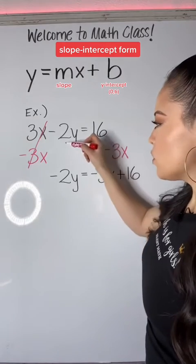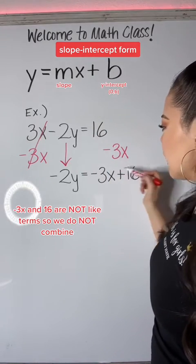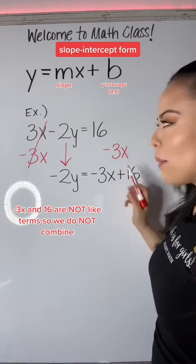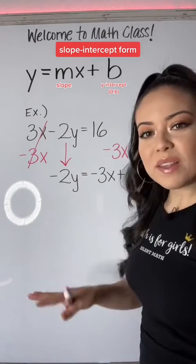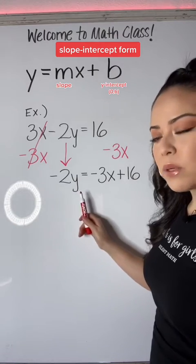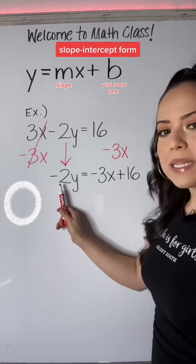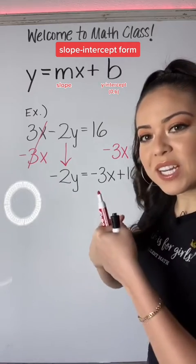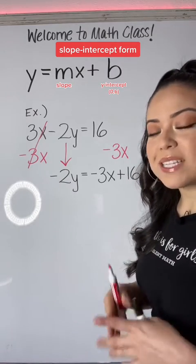So you just bring down the negative 2y, and put the negative 3x in front, and then add 16 because 16 is positive here. The last step is to isolate the y by dividing both sides by negative 2, because negative 2 and y are stuck together by multiplication, and the inverse of multiplication is division.